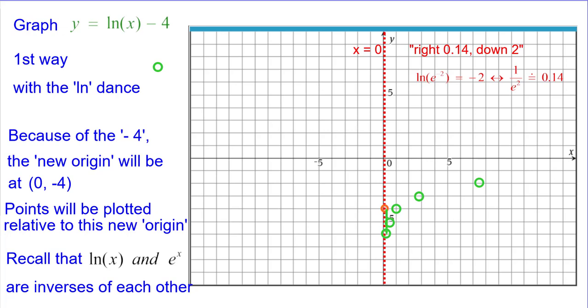The natural log of 1 over e squared is negative 2, and 1 over e squared is about 0.14.